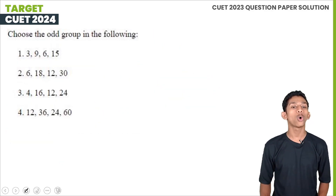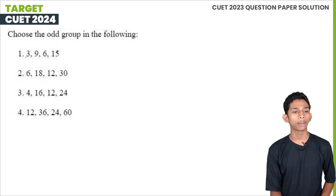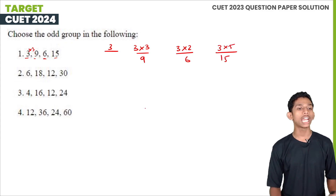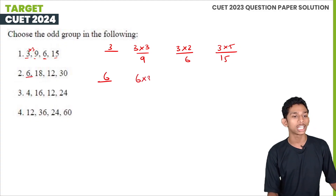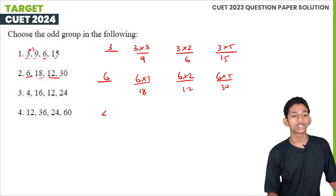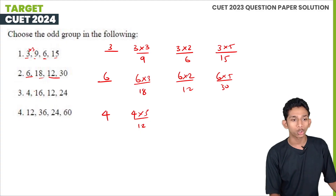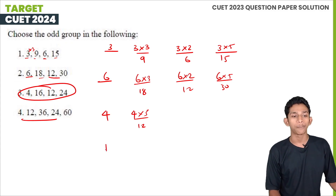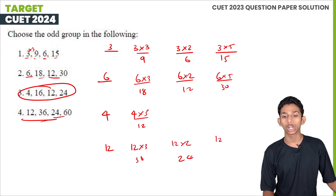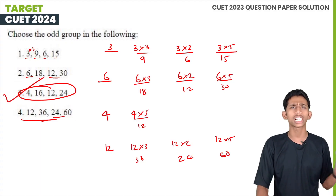Next question: choose the odd group from the following. The first group is 3, 9, 6, 15. Let's check: 3×3=9, 3×2=6, 3×5=15. Next group has 3×4=12. Then 4×5=20, 4×6=24, 4×3=12, 4×4=16. Then 12×2=24, 12×5=60. That means option 3 has one different common feature — it is the odd one.